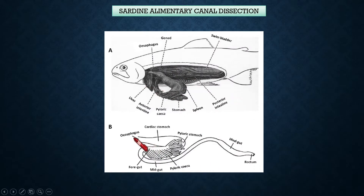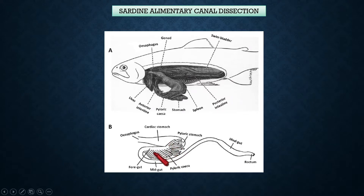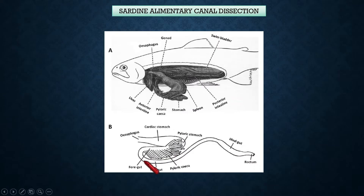The alimentary canal starts from the esophagus, then the stomach — which has a cardiac part and a pyloric part. Also very significantly, it presents a bend, which is a notable feature. Attached to the pyloric stomach are many finger-like structures called the pyloric caeca. The role of the pyloric caeca is to secrete enzymes that help the fish digest its food.